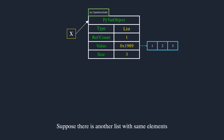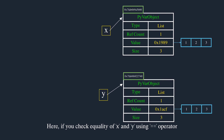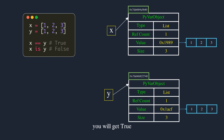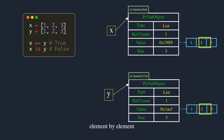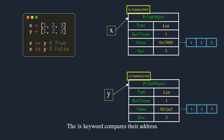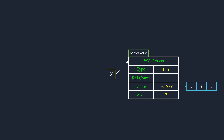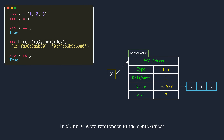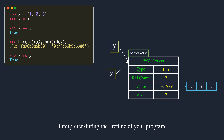Suppose there is another list with the same elements. If you check equality of x and y using the double equals operator you get True, but if you use is you get False. The double equals operator compares both list objects element by element, while the is keyword compares their memory addresses. If x and y were references to the same object, is would return True. The is keyword should be used to check if a variable is None, since only one None object is ever created by the Python interpreter during the lifetime of your program.